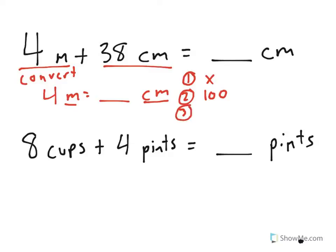Step 3, solve the problem. 4 times 100 equals 400 centimeters. So, 4 meters is actually equal to 400 centimeters.